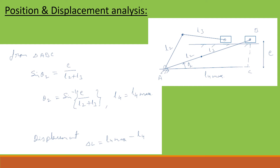The maximum position of the slider occurs when the angle between the crank and coupler is 180 degrees — both crank and coupler are in line — giving L4 maximum. From triangle ABC, sin theta 2 equals the opposite side E divided by the hypotenuse (L2 plus L3), so theta 2 equals sin inverse of E/(L2 plus L3). Having found L4 max and L4 minimum, the displacement equation is written as delta L equal to L4 max minus L4, where L4 is the position of the slider at any given angle.